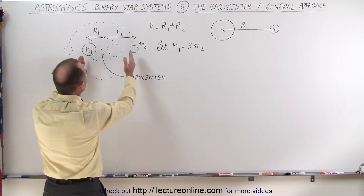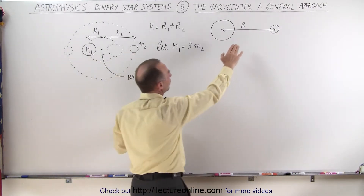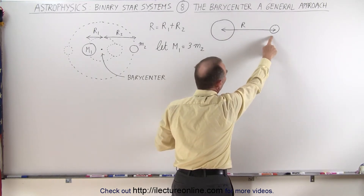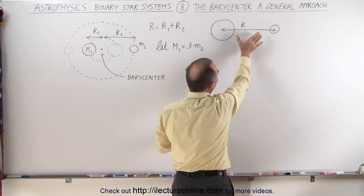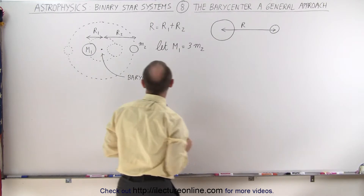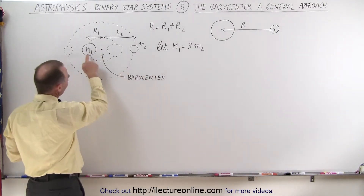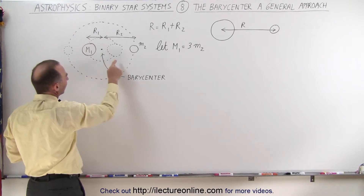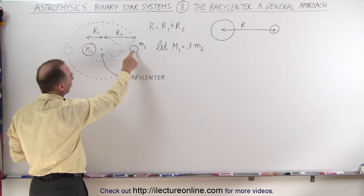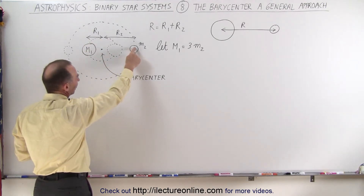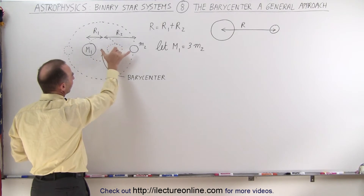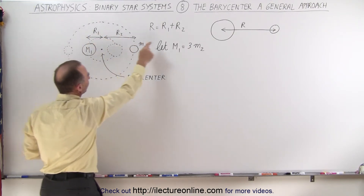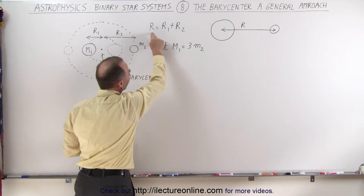The distance between the two objects is known as the semi-major axis of the small object revolving around the big object — let's call that R. The distance from the center of mass of the first object to the barycenter, let's call that R1, and the distance from the center of the second mass to the barycenter, let's call it R2, so that R1 plus R2 equals R.